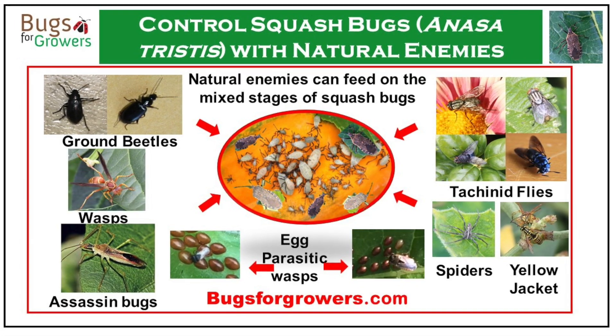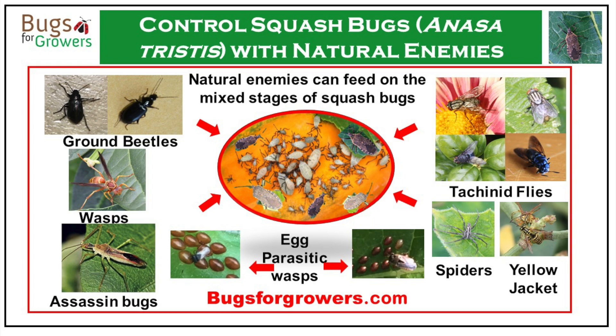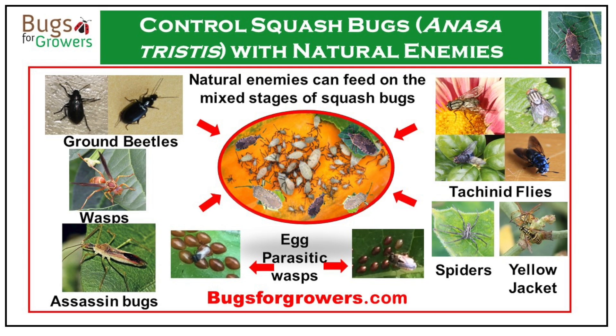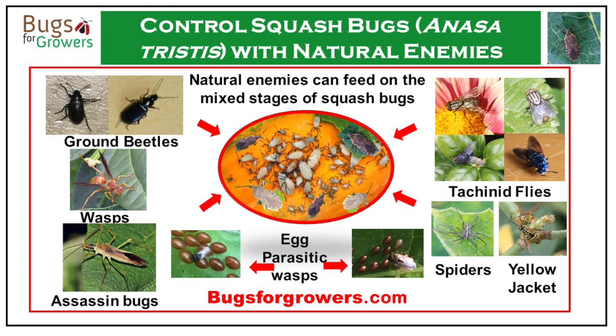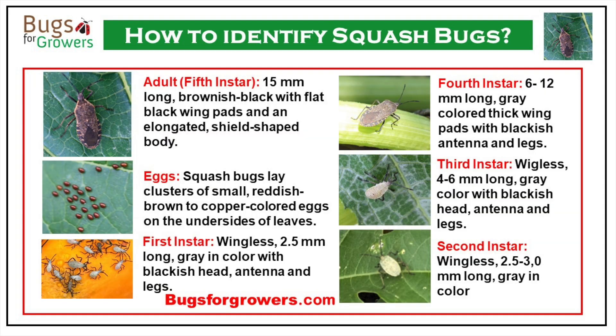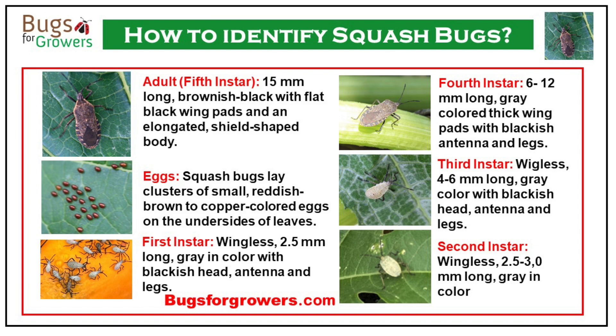Squash bugs are common pests of cucurbit plants such as squashes, pumpkins, cucumbers and melons. They have three life stages: adult, egg and nymph.